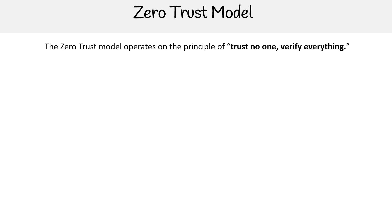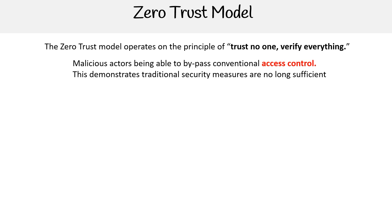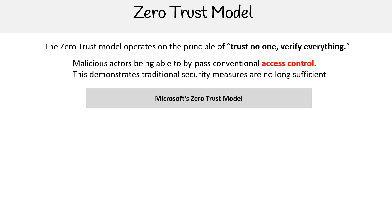The zero trust model operates on the principles of trust no one and verify everything. Nowadays, you can potentially encounter malicious actors that are able to bypass conventional access controls. This demonstrates that traditional security measures are no longer sufficient — we need to come up with a new way to protect ourselves. That's where Microsoft has come up with their version called the Microsoft zero trust model.